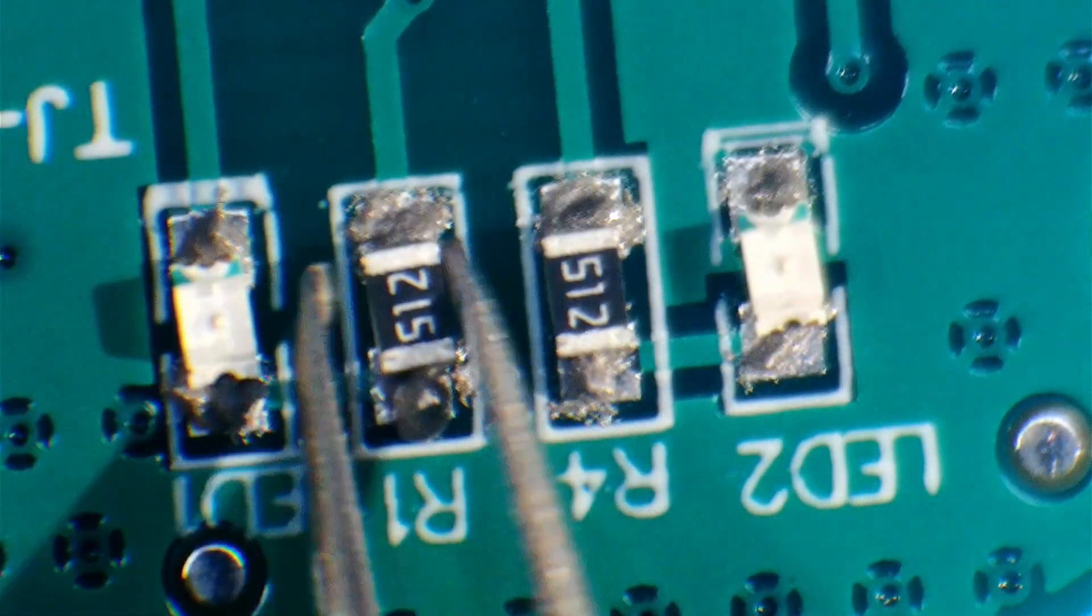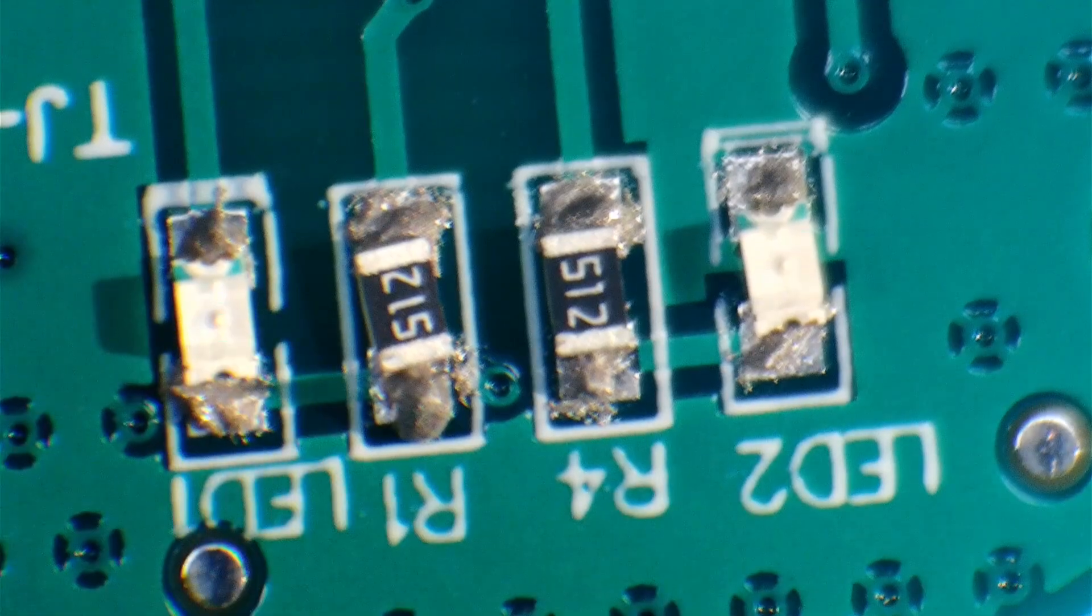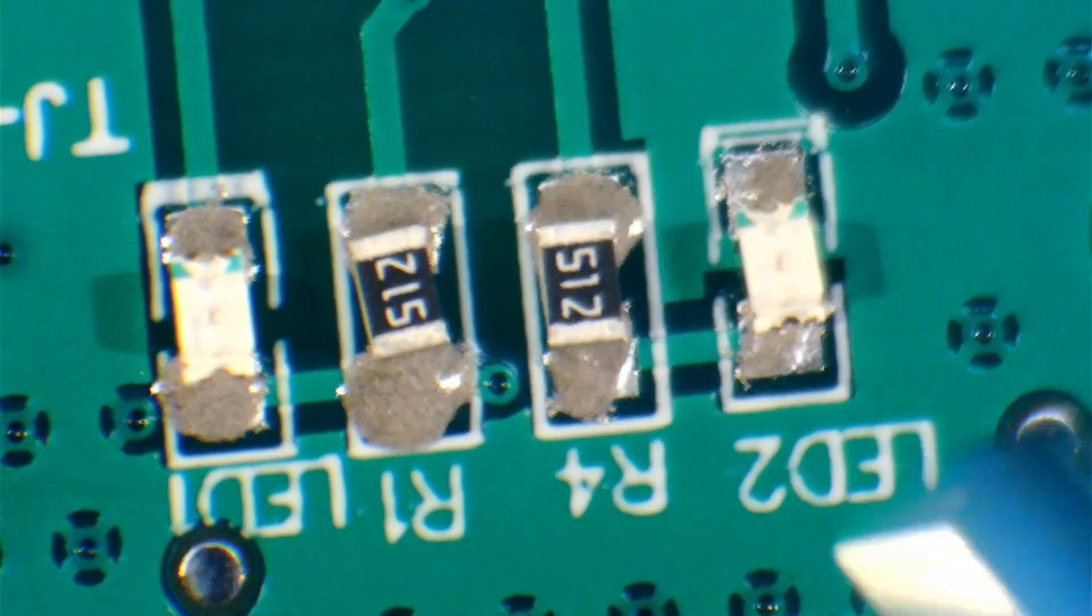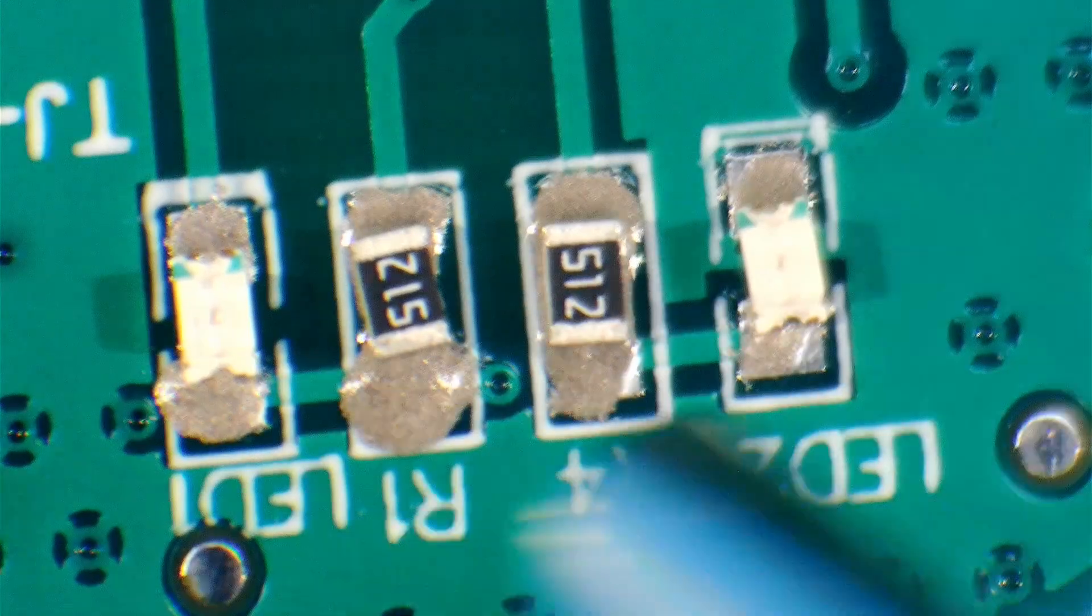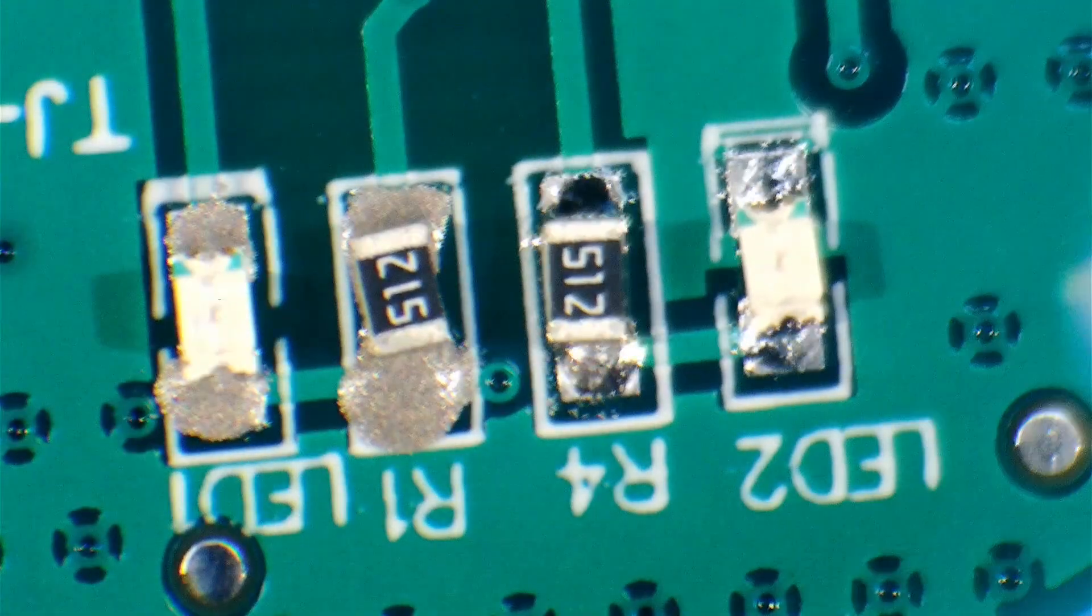When the hot air melts the solder, capillary action will pull the parts into place. The hot air does blow the parts around if you're not careful, so if you do it this way, try to have the hot air blow straight down.